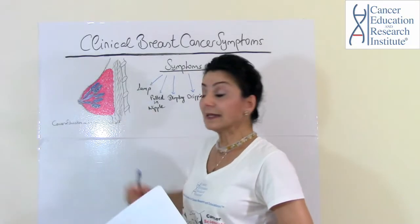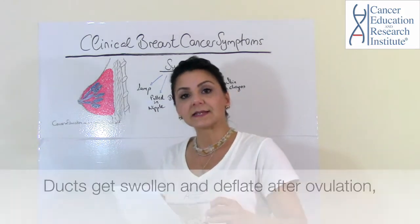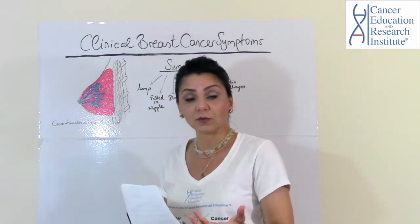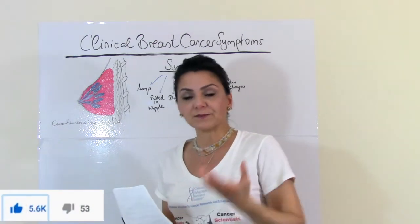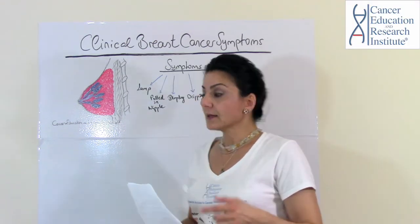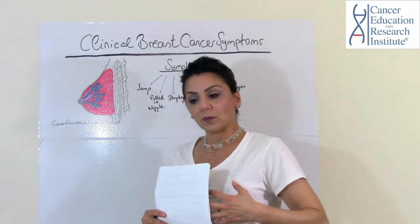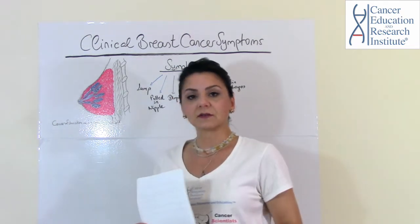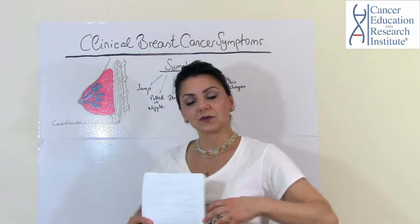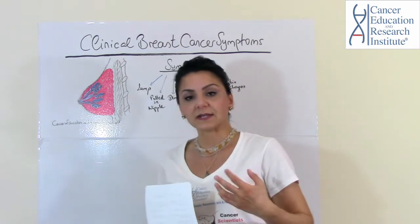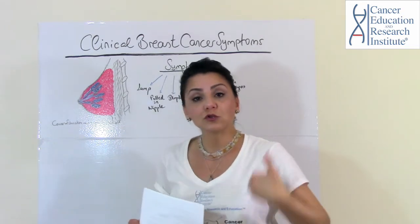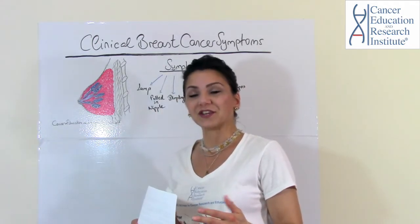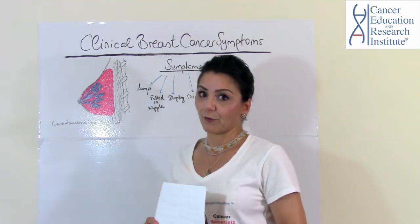The duct part increases, or gets swollen, and then deflates after ovulation because of the progesterone hormone. This hormone is also produced in great amounts during pregnancy. When this gets swollen, your breast can expand, it can hurt, it has some pain, and then after your menstruation cycle is over it will also deflate. So it will expand and deflate and can cause some pain. Therefore, you need to do your breast self-examination after your menstruation cycle, because of these hormonal changes due to the progesterone hormone.